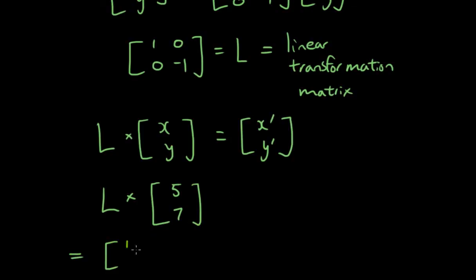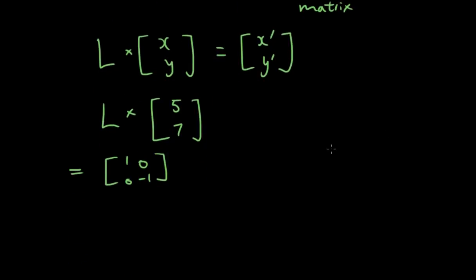So let's write it out. So L is [1, 0; 0, -1] times [5, 7]. Alright, 1 times 5 is 5, 0 times 7 is 0, so it will be 5. 0 times 5 is 0, -1 times 7 is -7, so that is the answer. And this is therefore the image of this point if we apply this transformation matrix to it.